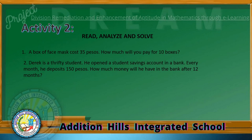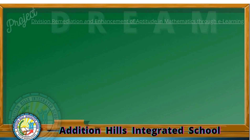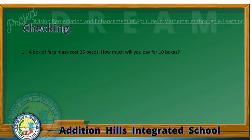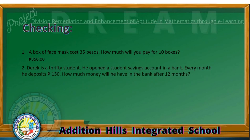Are you done answering? Time to check. Number 1: A box of face masks costs P35. How much will you pay for 10 boxes? The correct answer is P350. Problem number 2: Derek is a thrifty student who deposits P150 every month. How much money will he have after 12 months? The correct answer is P1,800.